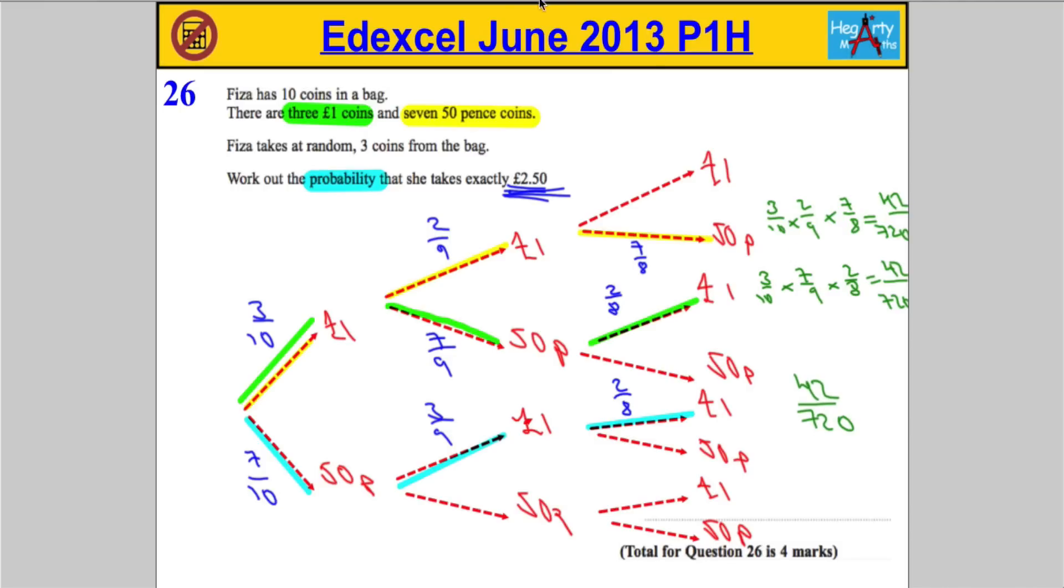So they're the probabilities that we're interested in. They all result in me getting 2 pounds 50 exactly. So what we're going to do with those probabilities, we're going to add that to that to that, because there are all the different ways it can happen. 42 plus 42 plus 42 is 126 out of a total of 720. And you can leave your answer like that. No need to simplify it, because it didn't specify in the question. And that, ladies and gents, should get you 4 marks.